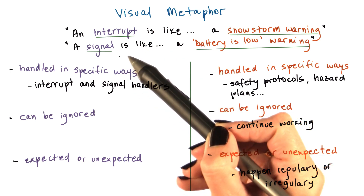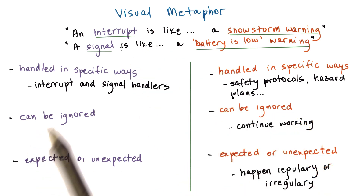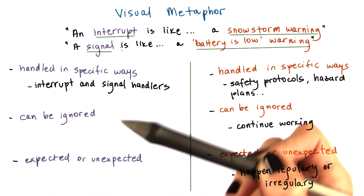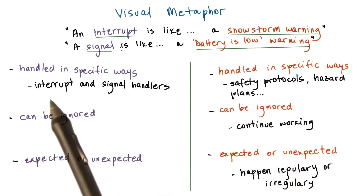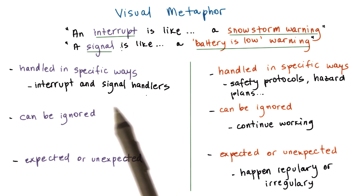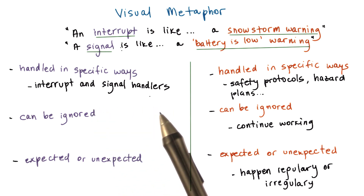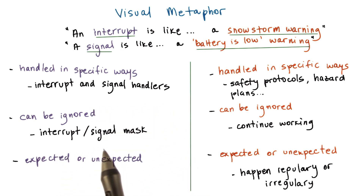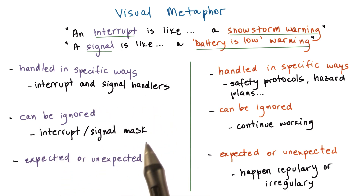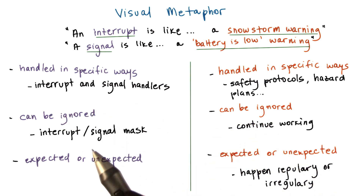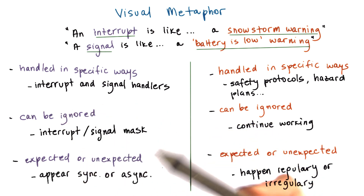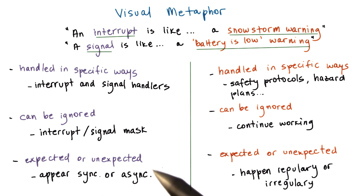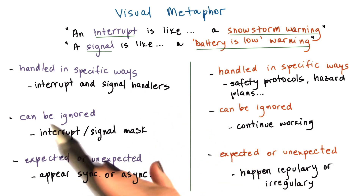If we think about interrupts or signals, both of them are handled in a specific way, and that's defined by the signal handler. Next, both interrupts and signals can be masked, and in that way we can ignore them. And finally, as we previously discussed, these types of events can appear synchronously or asynchronously. So, we have some analogy between these two contexts again.